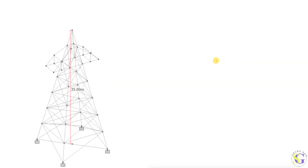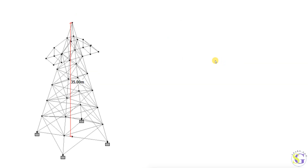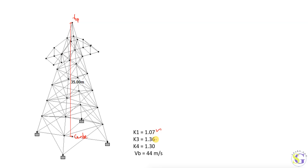Now let's look at the numerical. This is the sample tower I have taken — already modeled for a 35 meter height, measured from the center base to the top crown. For K1, I am taking 1.07 for transmission towers as discussed with respect to the codebook. K3 I am taking the maximum value of 1.36, and K4 for the cyclonic zone, especially for towers, is 1.30.